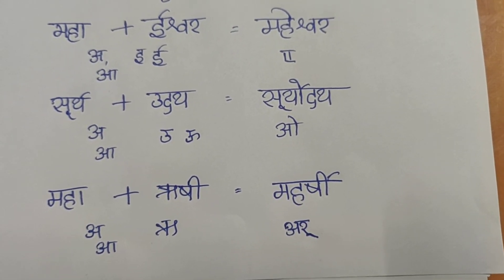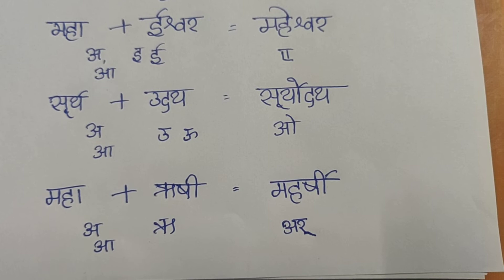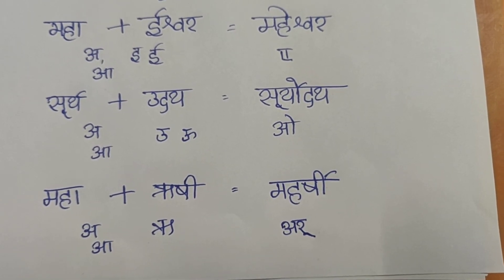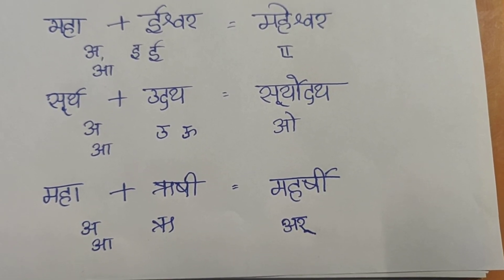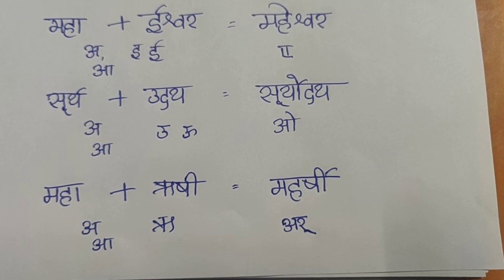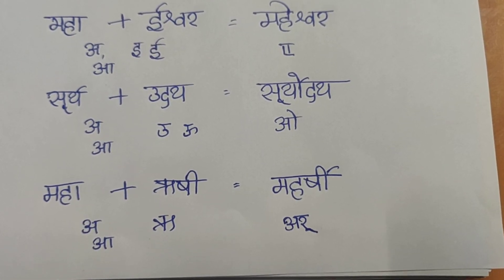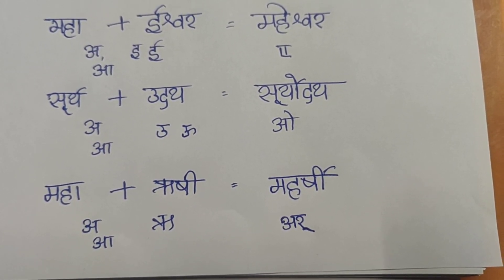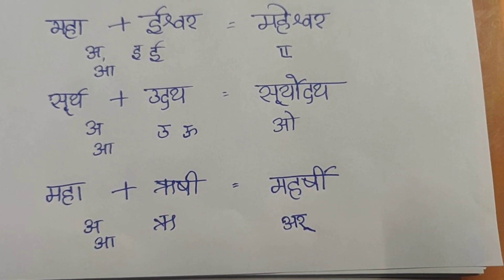Here also the same rule applies. The first word can end either with A or Ā, and the second word can start with U or Ū. In both cases, the Sandhi result will be O — the united letter will be O.